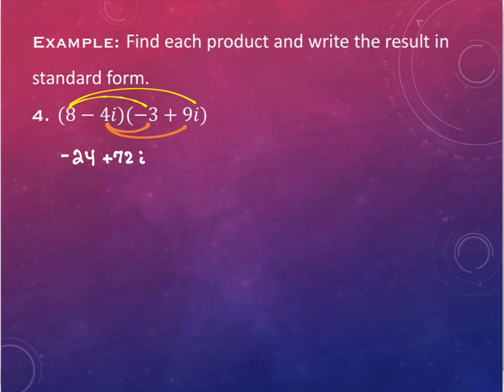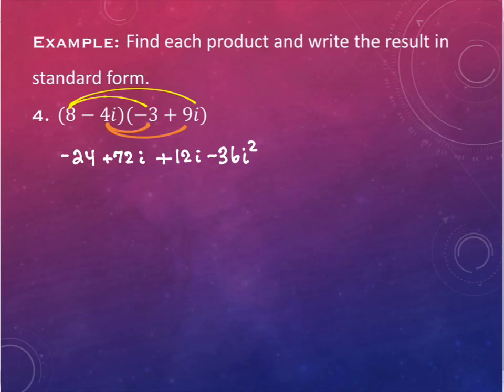The orange pieces are on the bottom. I have negative 4i times negative 3. It's a positive 12i. And then the last one is a negative 36i squared. Still thinking in terms of traditional algebra with x's, what's the one other thing that I would need to do for this particular problem?